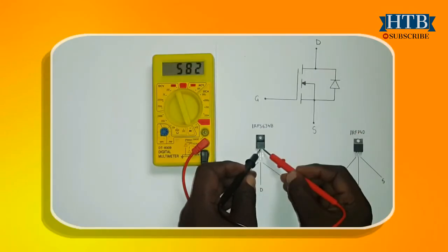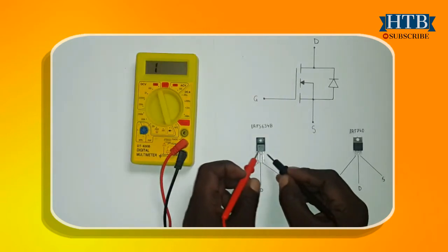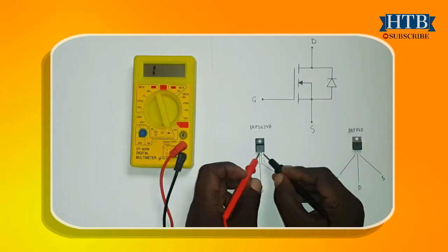In forward bias, I am getting 584, which is a good sign already. Now test the diode in reverse and see what you get. This diode is okay.